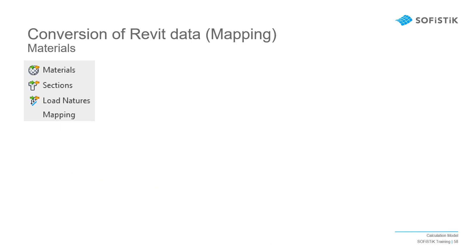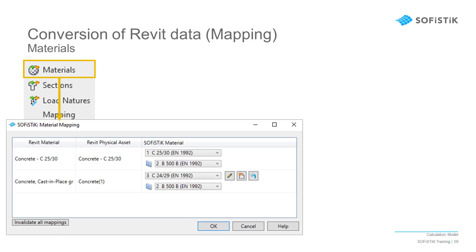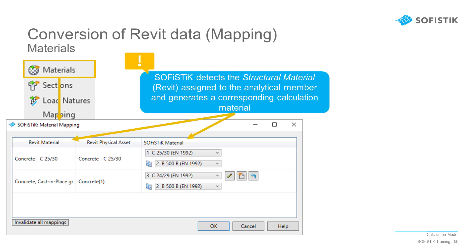Now that you have defined properties for all the elements, we also want to use some general properties which are already contained in the Revit file. Sophistic will therefore create the corresponding calculation information and then we will check or adjust them. This whole process is called mapping. For the materials, the software will look at the Revit materials used in the model, examining both their name and their properties. Out of this information, the software will create a corresponding Sophistic material.